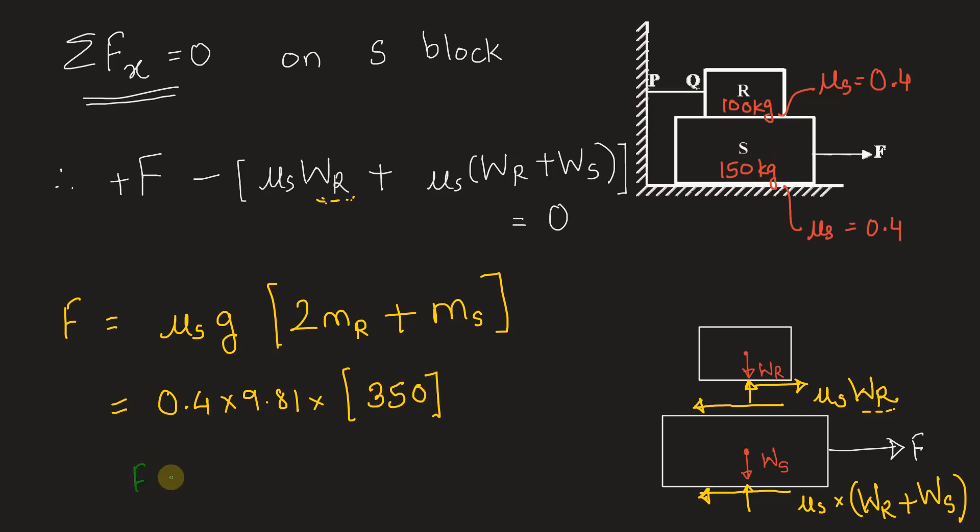So we have the force value to be 1373.4 Newton. Of course because we are using G in meter per second square and mass is given in kg, we get the answer in Newton. But the question is asking us to fill in kilonewton. So this will be equal to dividing it by thousand, 1.373 kilonewton. Let's go back and fill the answer.